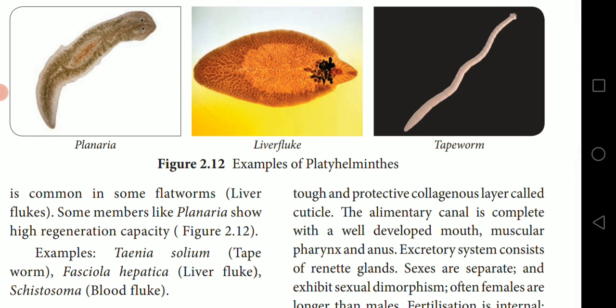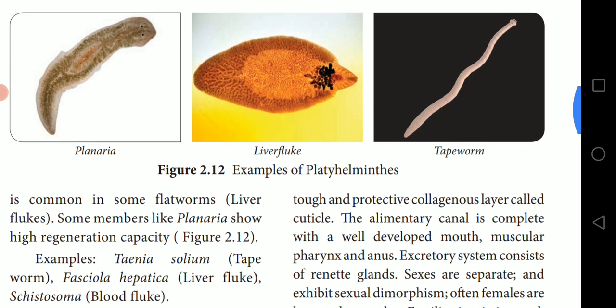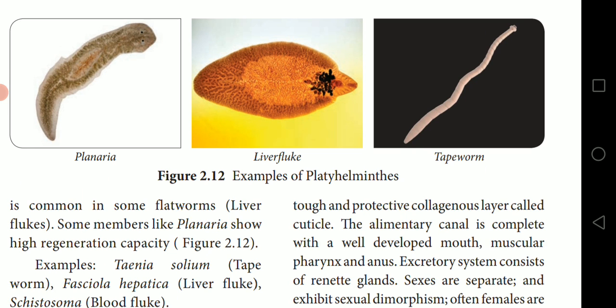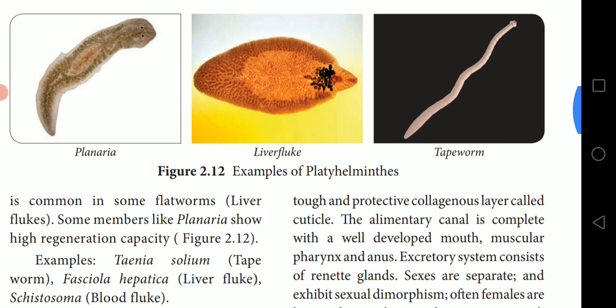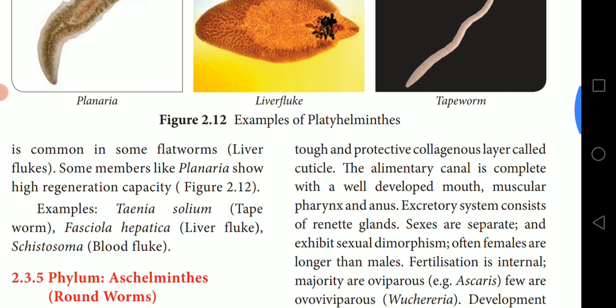Polyembryony is common in some flatworms like the liver fluke. Some members like Planaria show high regeneration capacity — if any organ is lost from their body, the lost part will grow back fully. Examples include Taenia solium (tapeworm), Fasciola hepatica (liver fluke), and Schistosoma (blood fluke).